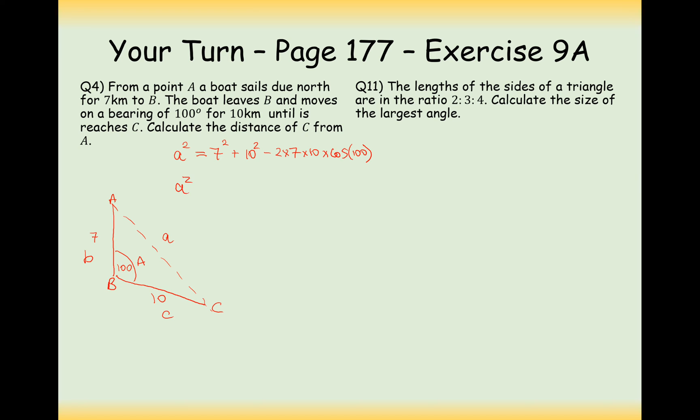So luckily we're calculating A squared which appears at the start of the formula. So this is going to be 7 squared add 10 squared minus 2 times 7 times 10 times cos of 100. So therefore A squared is 173.3 and then square rooting it, only taking the positive value because we have a length here, and we get 13.2 kilometers.